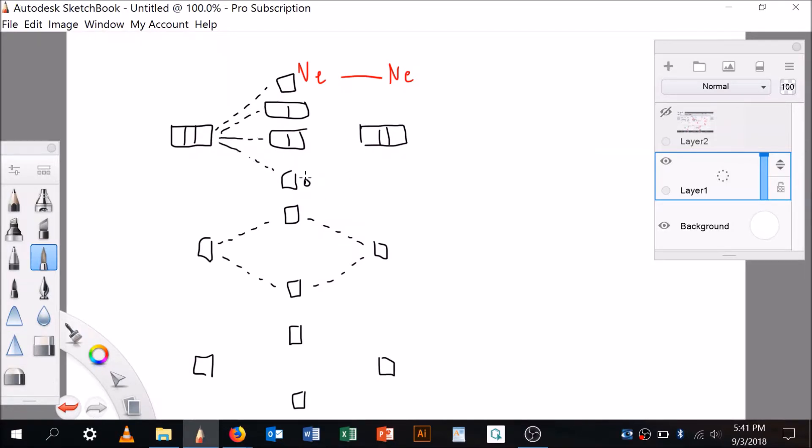This is a sigma, this is a sigma star, here's a pi and here's a pi star. Now in neon, your 1s is filled, your 2s is filled, and so is your 2p filled.